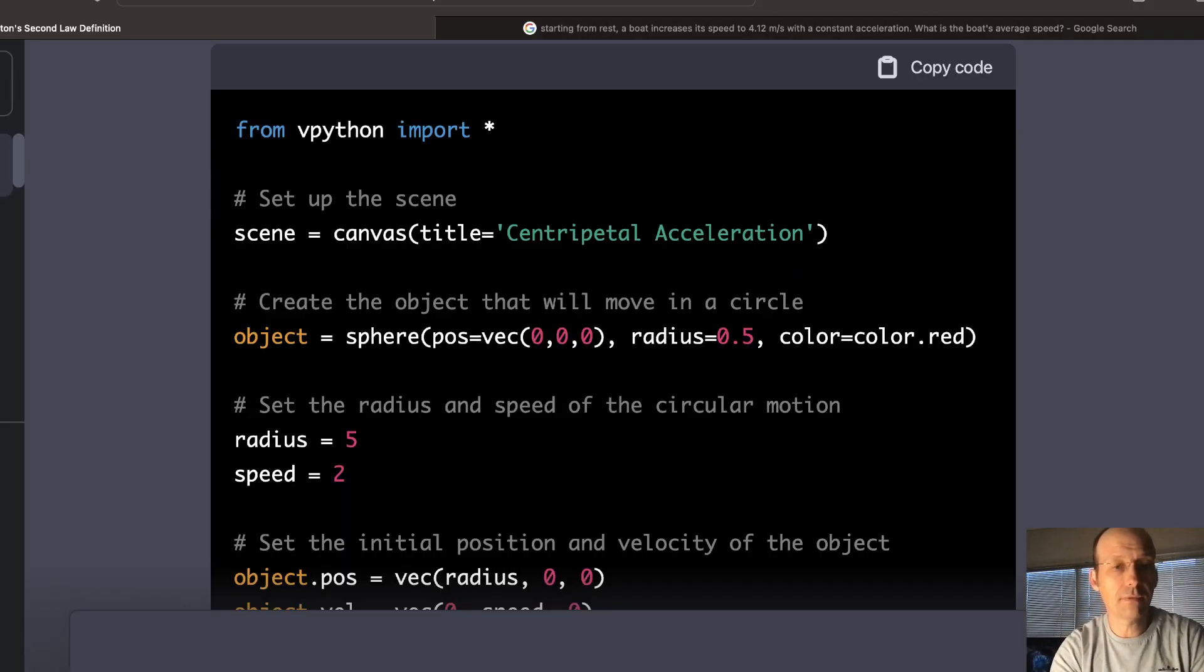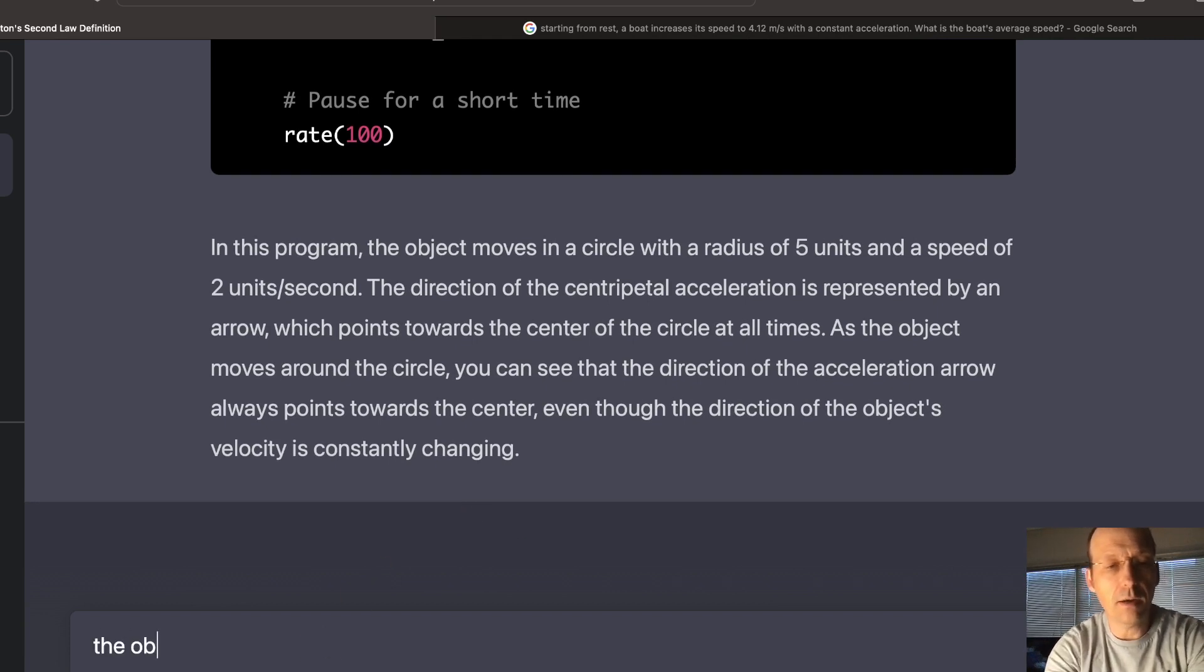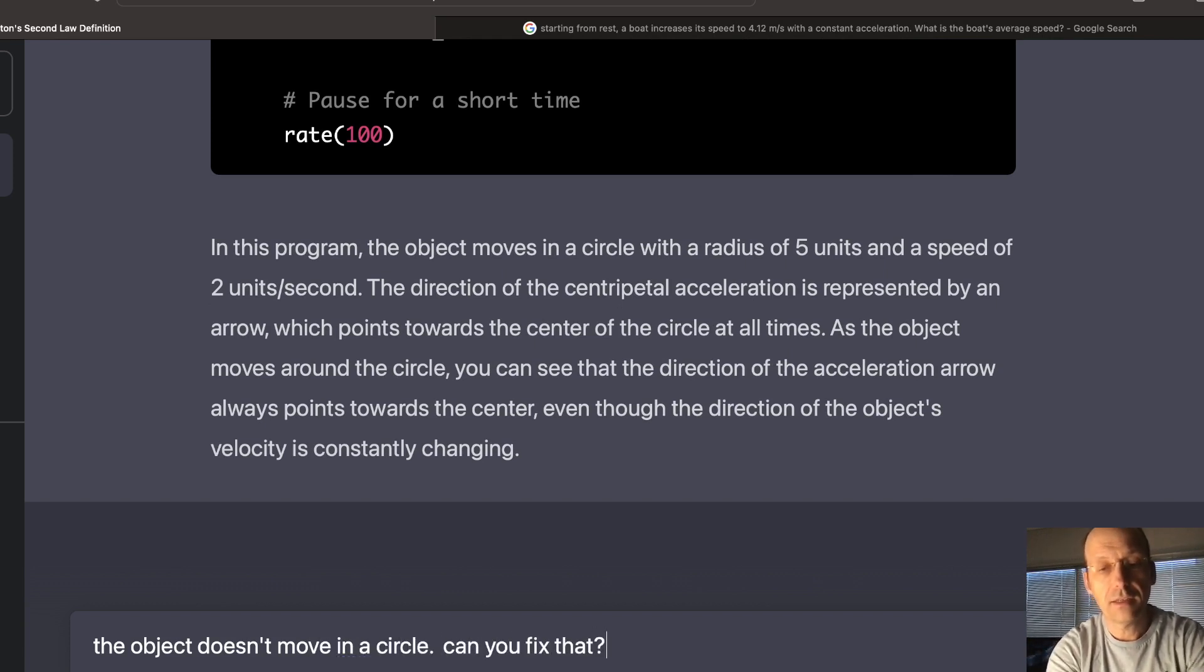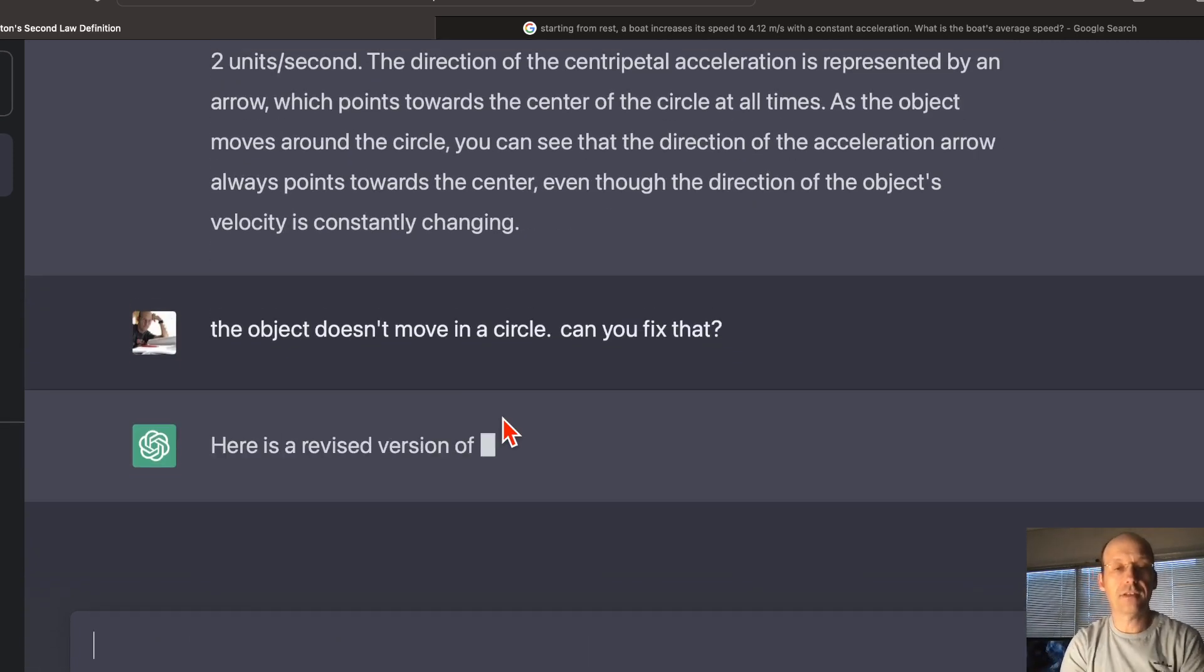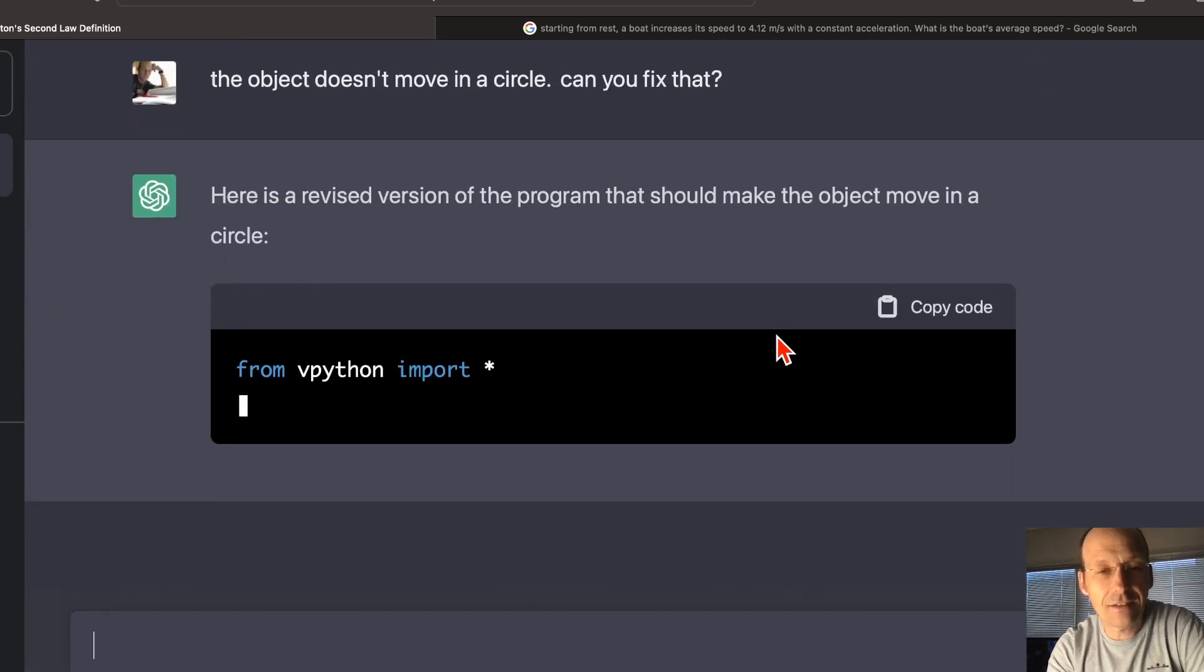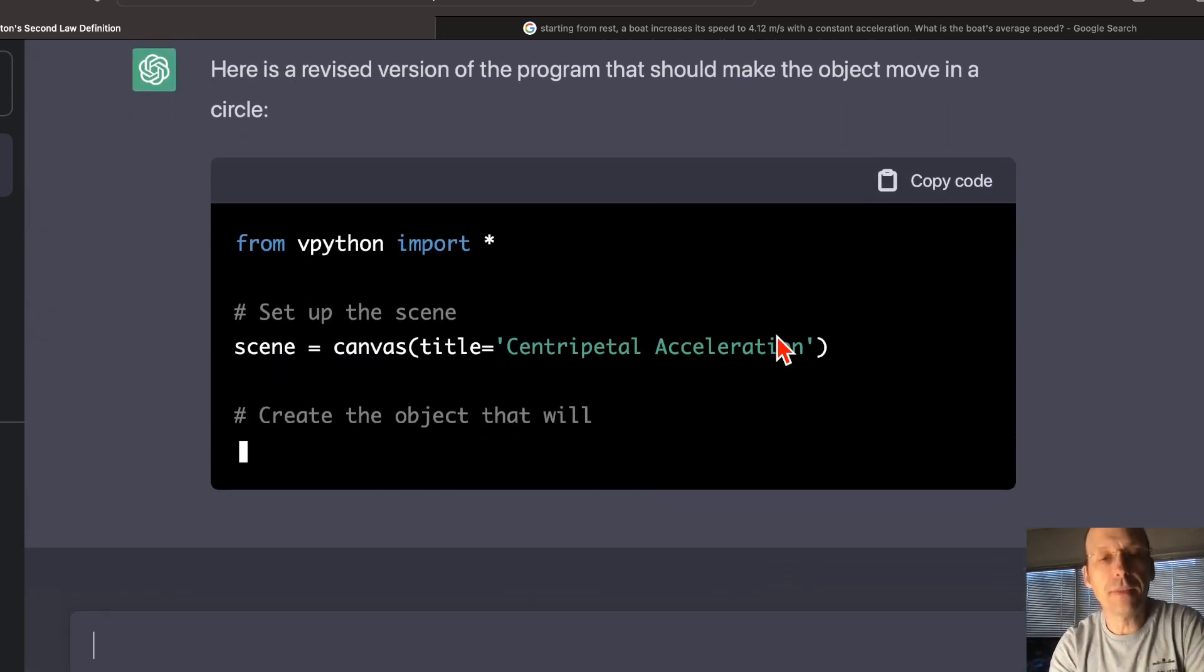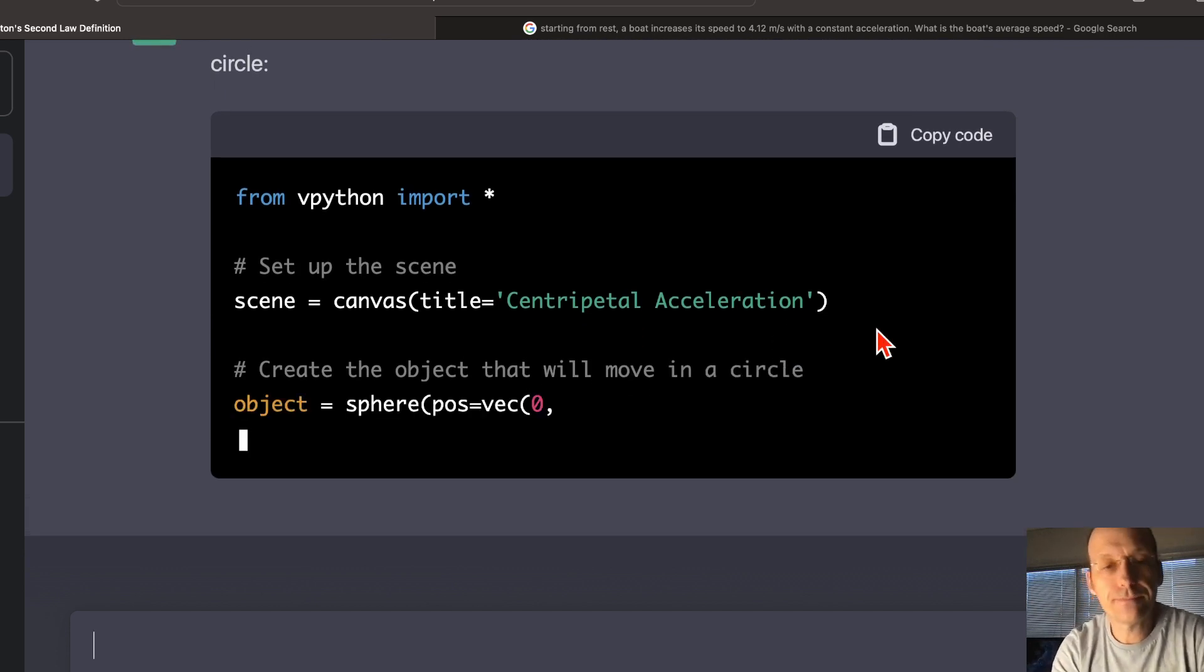Okay. Let's see if it can fix its error. The object doesn't move in a circle. Can you fix that? Oh, I'm so sorry. Here's the error. Let's see. Okay. Let's see. Sometimes the slowness is just, you know, not... It's just too much for me. But, let's see if it catches the one error.